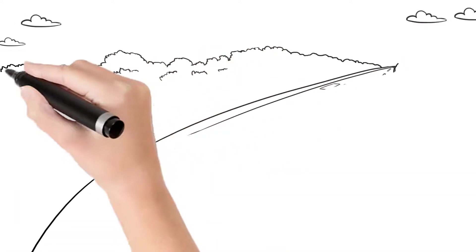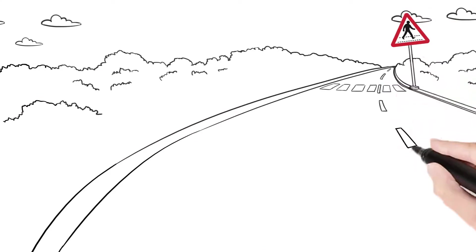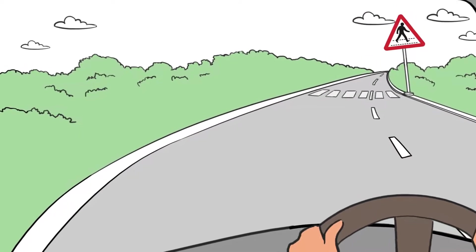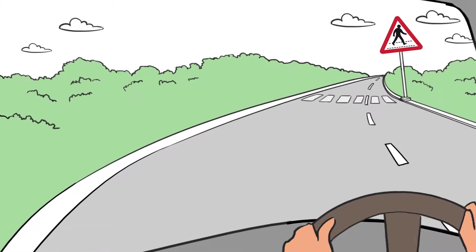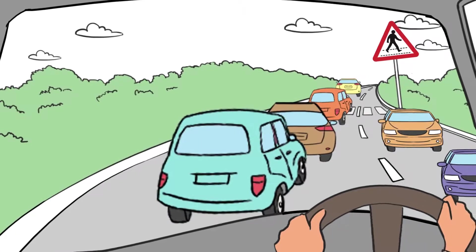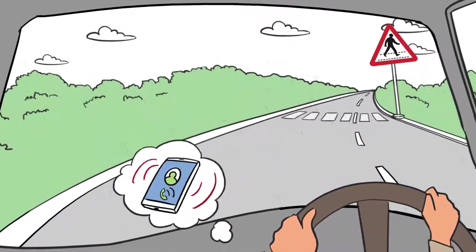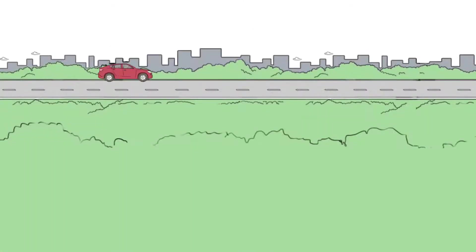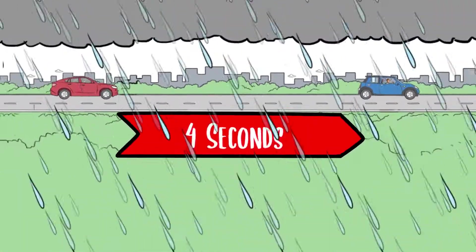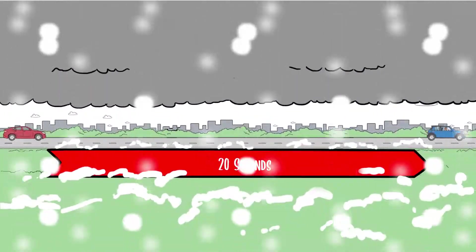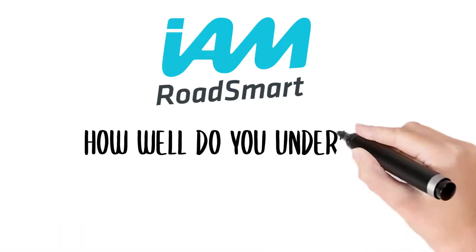Whenever you're driving or riding, ask yourself, am I able to stop safely within the distance I can see to be clear on my own side of the road? The answer will depend on a range of factors including traffic levels, weather conditions and whether you're alert or distracted. Be prepared to adjust your speed and following distance to ensure that you are able to stop safely should a hazard arise.